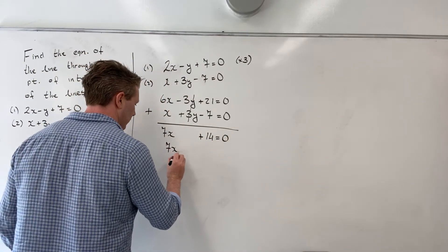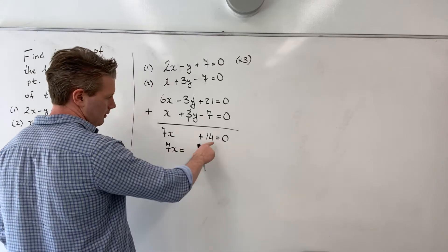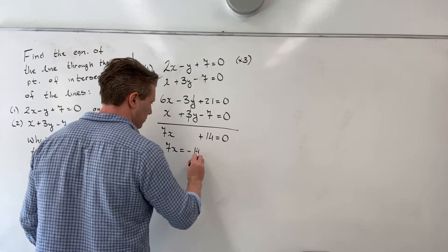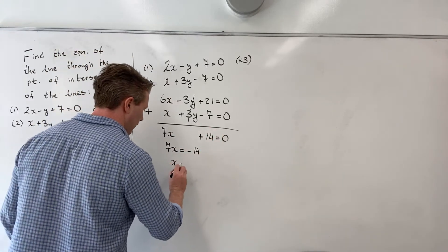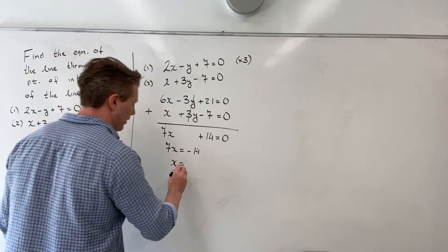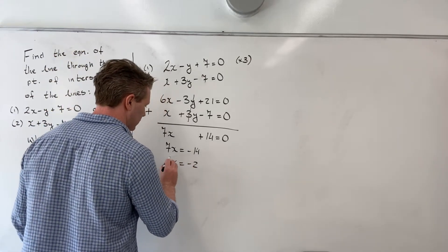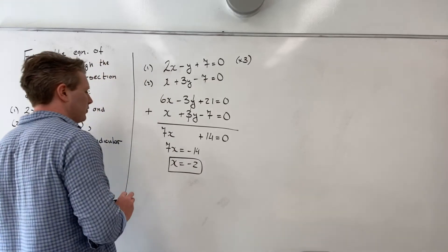And so I will get 7x, I'm left with 7x equals negative 14, subtracting 14 to the other side, dividing both sides by 7, I get that x equals negative 2. So I have my x value.